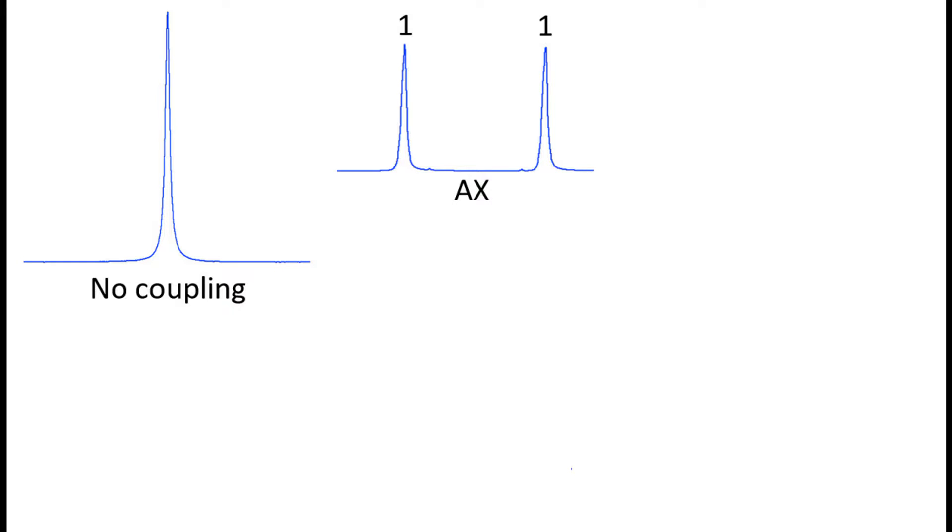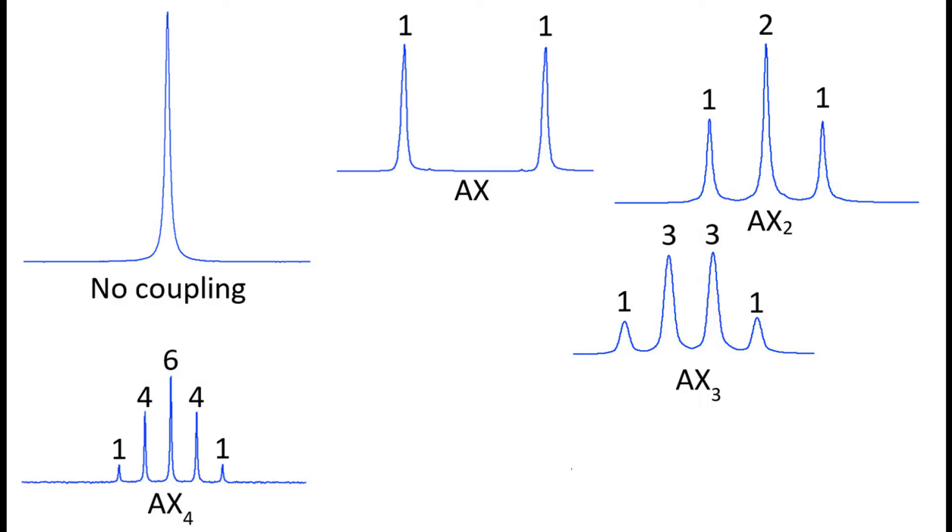One coupled nucleus gives a 1 to 1 doublet. Two coupled nuclei lead to a 1 to 1 triplet. Three coupled nuclei lead to a 1, 3, 3, 1 quartet, and so on. For 12 coupled nuclei, giving a trideset of 13 signals.